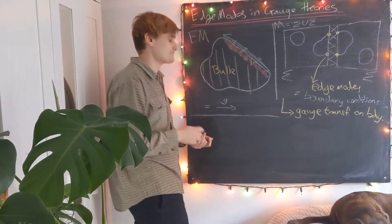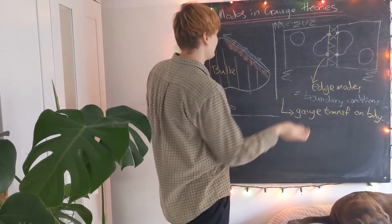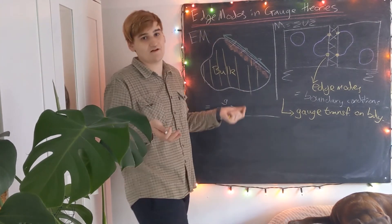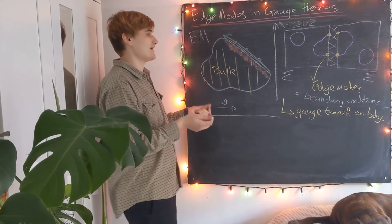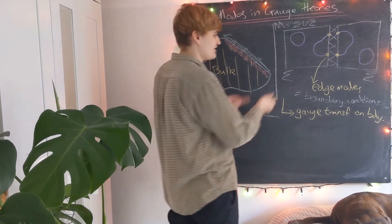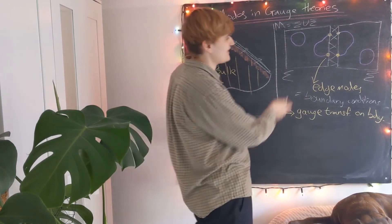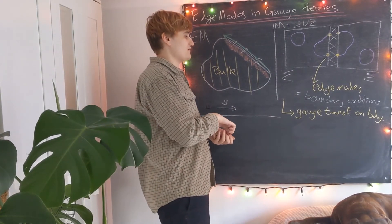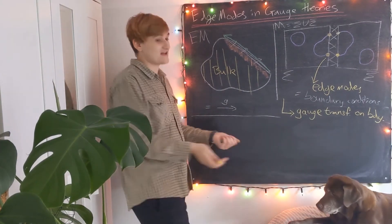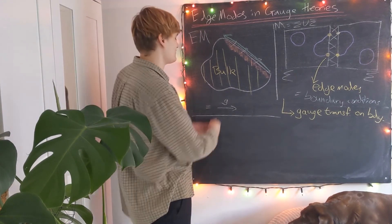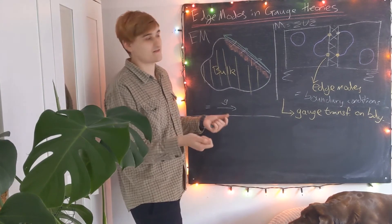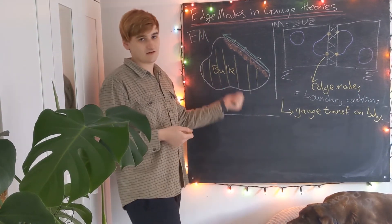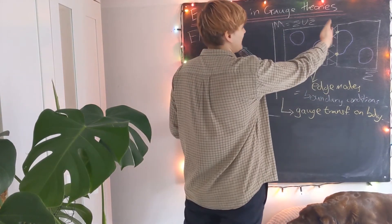To summarize: when we introduce a boundary, potentially bad things can happen — gauge invariance can be broken, and we need to know what happens to our gauge fields on the boundary. This is done by introducing edge modes, which realize that the gauge field from the bulk, when restricted to the boundary, is the same gauge field on the boundary. Edge modes accomplish this because they are gauge transformations — they can ask whether one gauge field is the same as another. The edge mode is the gauge transformation which witnesses that the bulk gauge field is the same as the gauge field defined on the boundary.